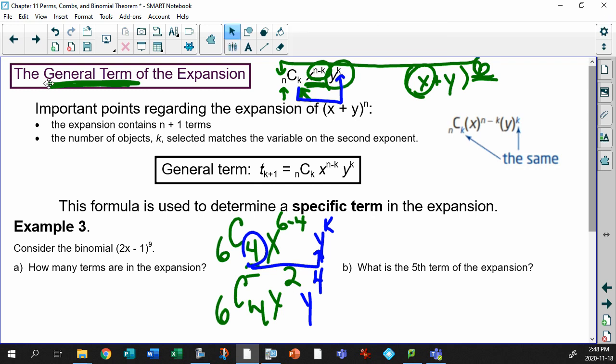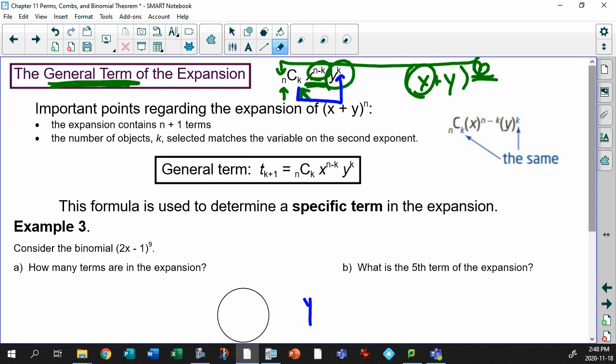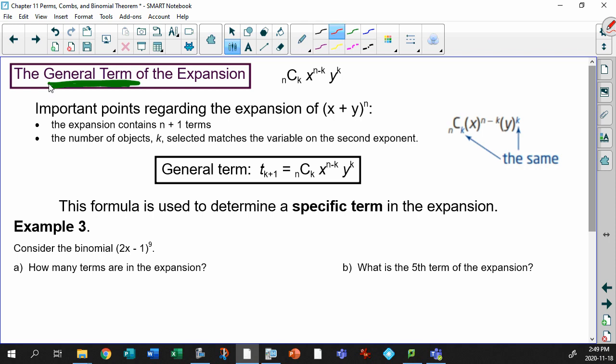So how does this help us? Well, let me show you a couple things where this is going to help us. This general term is going to help us a huge amount. A couple important points before we do this, though. Remember, whenever you're dealing with an expansion, the expansion is whatever the power is plus 1. So if we're going to the power of 6, we have 7 terms. If we go to the power of 10, we have 11 terms. If we go power of 22, we have 23 terms. You see what I mean? Now, the number of selected objects, k, always matches the variable on the second exponent. That variable right there. Do you see it?